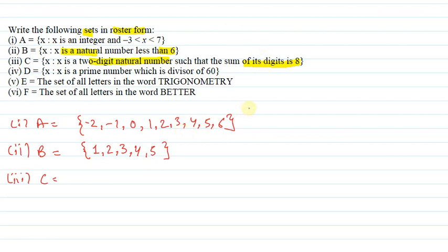What does this mean? Suppose we have 23. So this is a 2-digit number. And if we have 2 plus 3, then we have 5. So this will be 8. So we need a 2-digit number. The sum of its digits is 8.